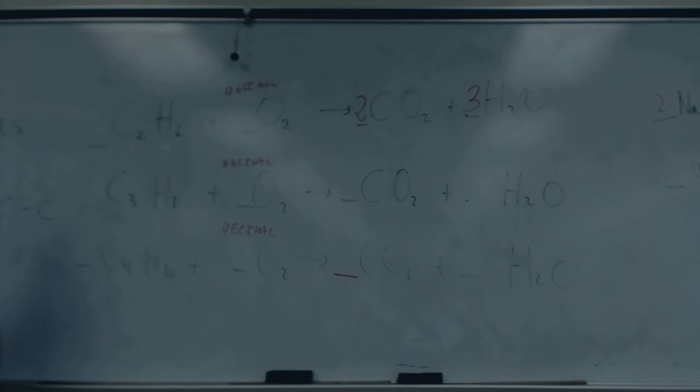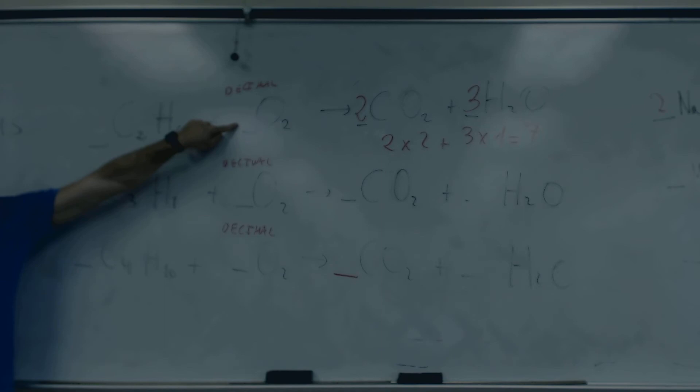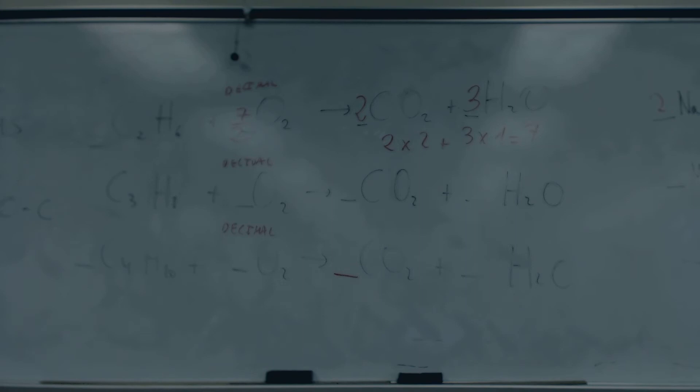Six hydrogens here, I put a three here. And then I have to recalculate the oxygens. Okay? So I go two times two plus three times one is seven. So I need seven oxygens here. How do I do it? Three point five.